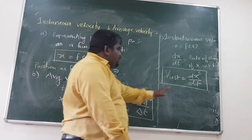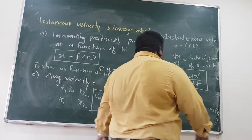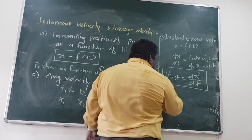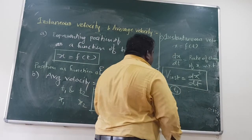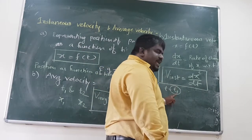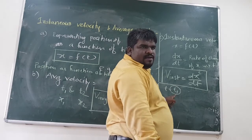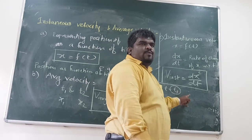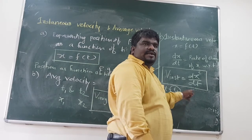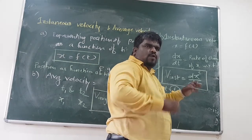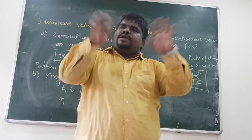So instantaneous velocity is dx by dt, whereas average velocity is delta x by delta t. This is the general expression. Then based on t equal to t1, t2, t3, t4 — whatever point you want to find out — you can do that.